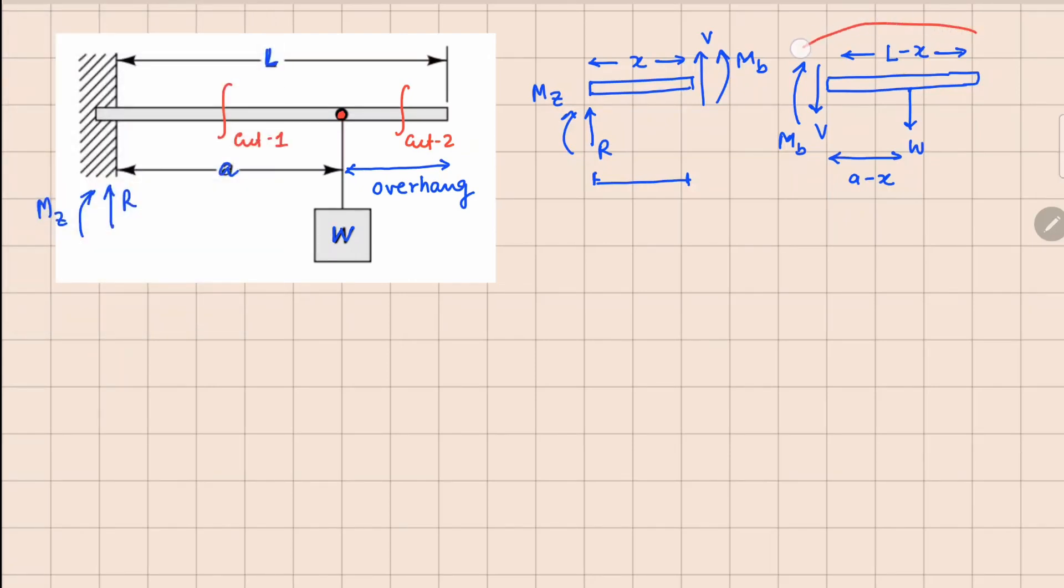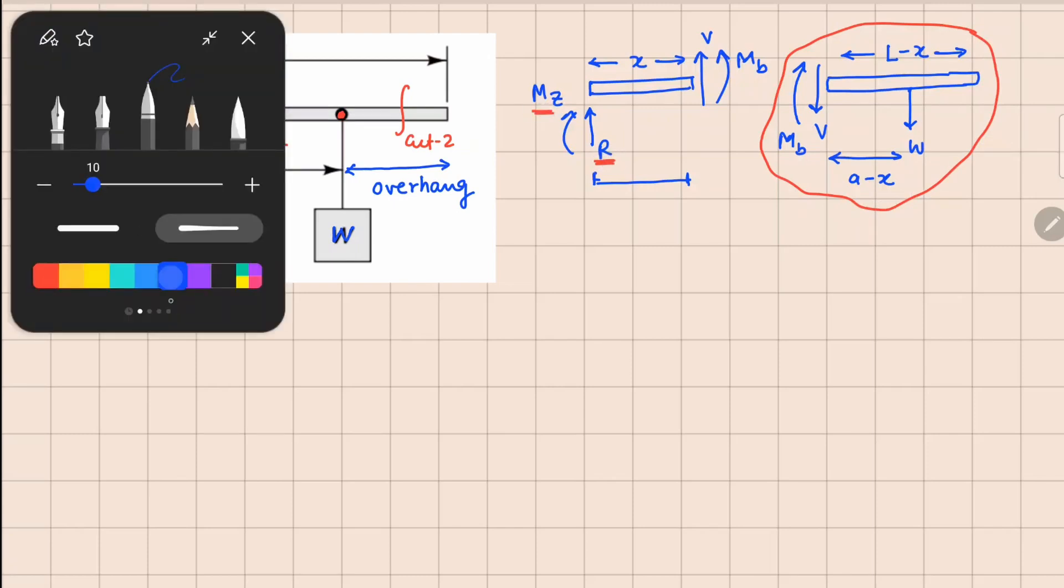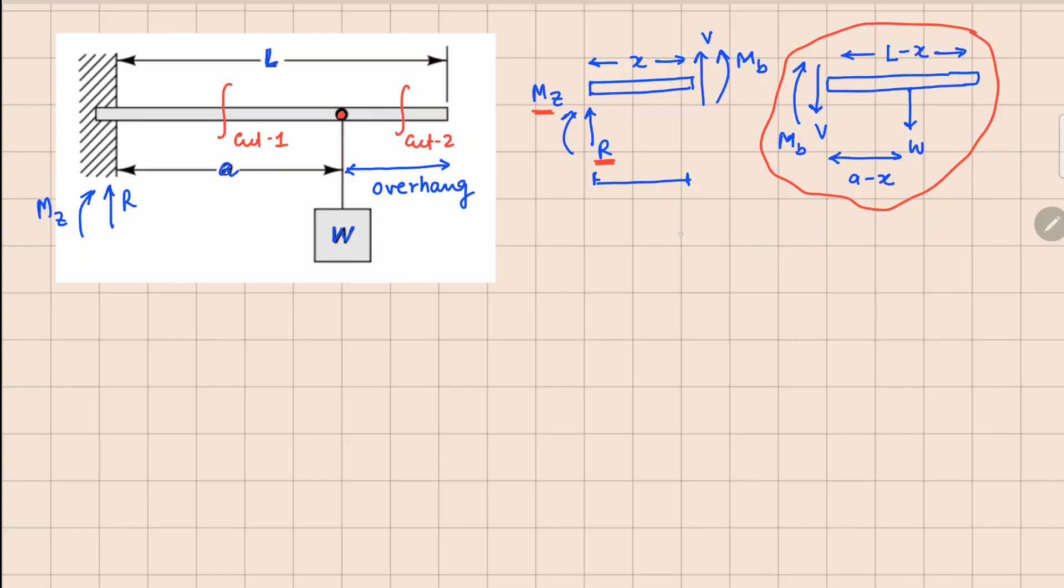Now considering all the forces, it seems easier if I analyze this one right here because we do not know the value of R and MZ here. So doing a force balance on this again, we get V plus W equals to zero, so this gives us value of shear force as minus W. And your bending moment MB, if I take moment about this point, is going to be MB plus W times A minus x equals to zero, or your MB value is W times x minus A. Since all of this is coming from your cut one, I can denote this as V1 and this one as MB1 right here.